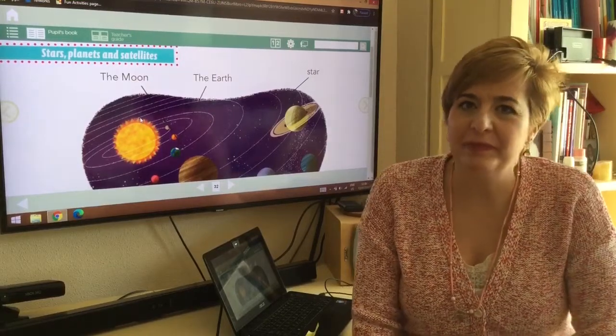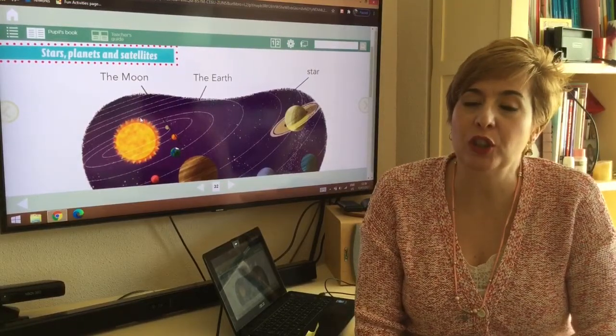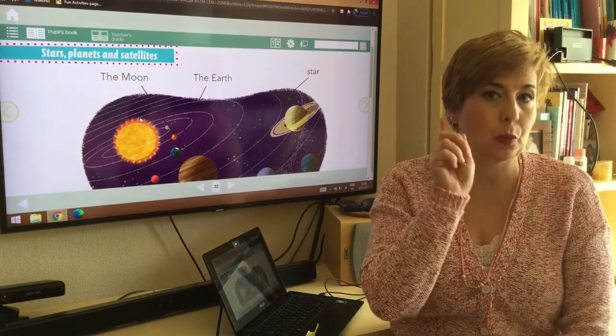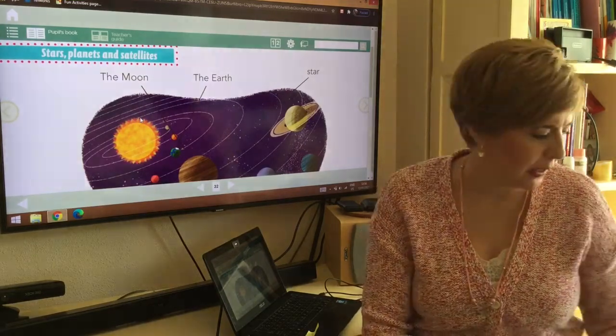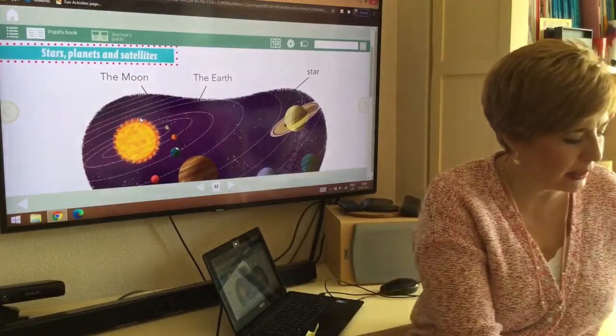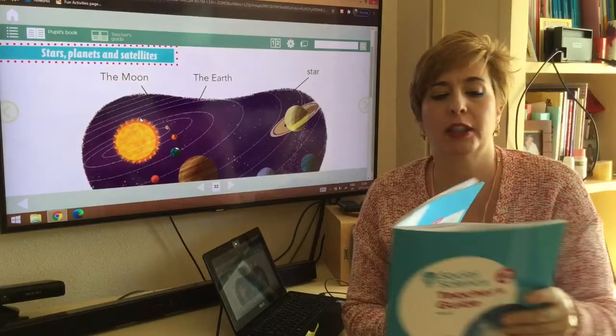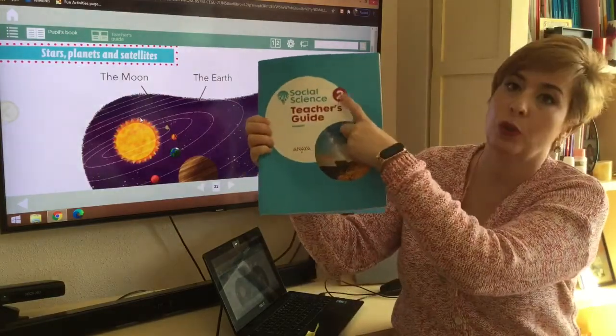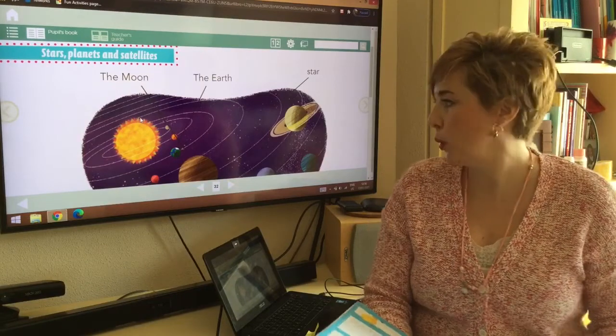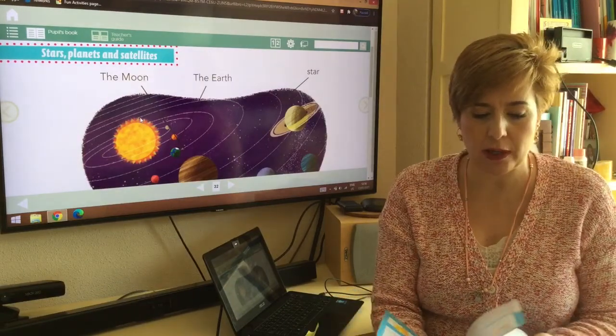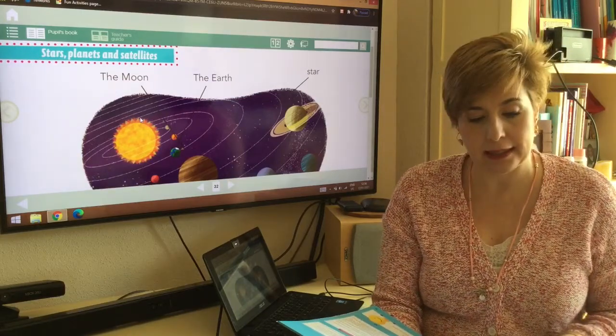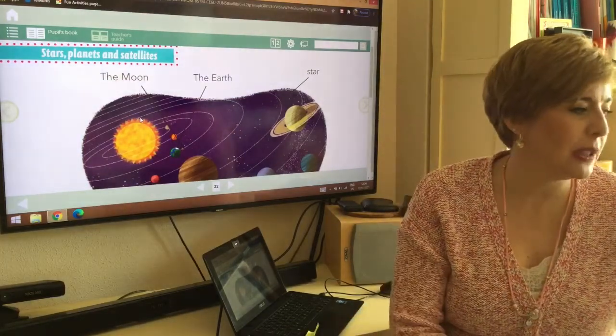Hello everybody, this is a revision for social science year 2 units 1 and 2, the first term. This is the book you need, your book social science year 2, not 1. We are going to do a little bit of the picture dictionary and then we are going to do the review.